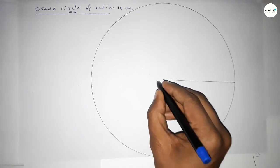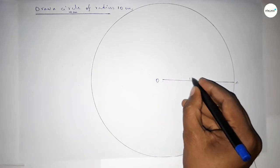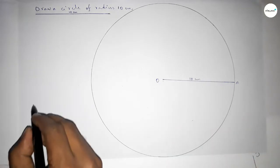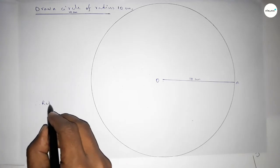Taking the center here as O and here a point A. So OA is 10 centimeters. Therefore, radius OA equals 10 centimeters.